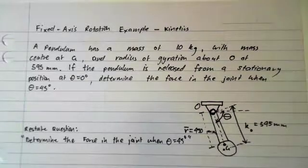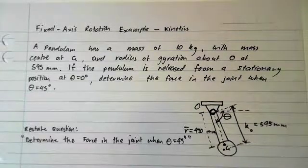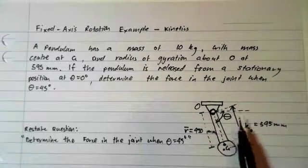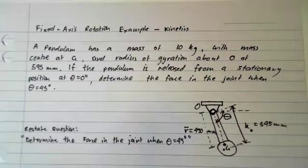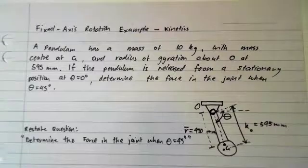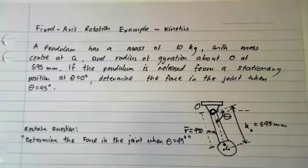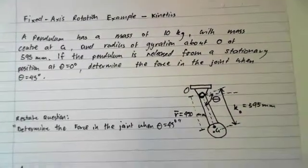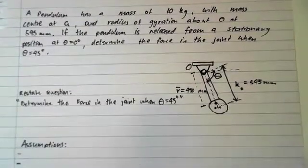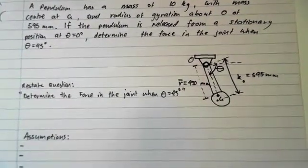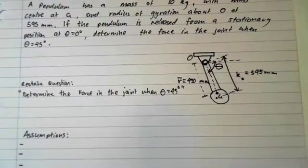If the pendulum is released from a stationary position at theta equals 0 degrees, which is just up here, then we must determine the force in the joint when theta is 45 degrees. The first thing to do is restate what they're actually looking for, and that is determine the force in the joint when theta equals 45 degrees.